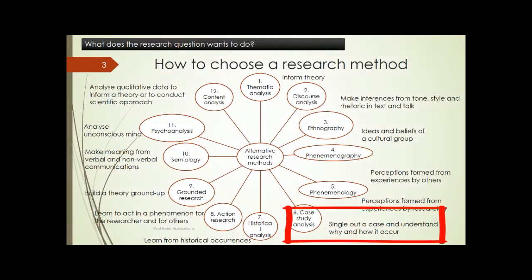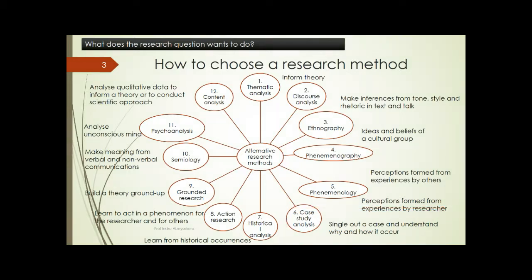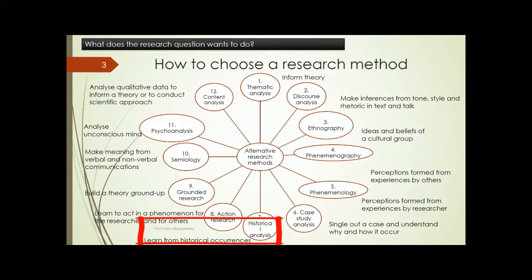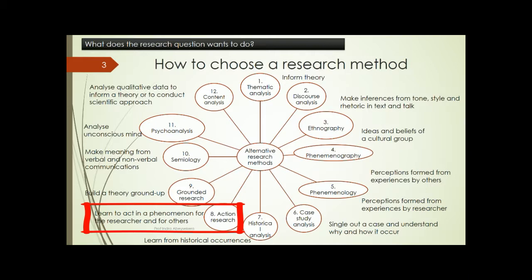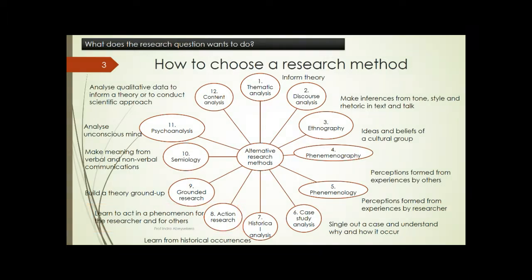Sixth is case study analysis: we can single out a case like a company and understand why and how a phenomenon takes place. Seventh is historical analysis: we can learn from historical phenomena and make conclusions. Eighth, action research: we can learn to act in a phenomenon for us as researchers and for others as well by engaging in action.